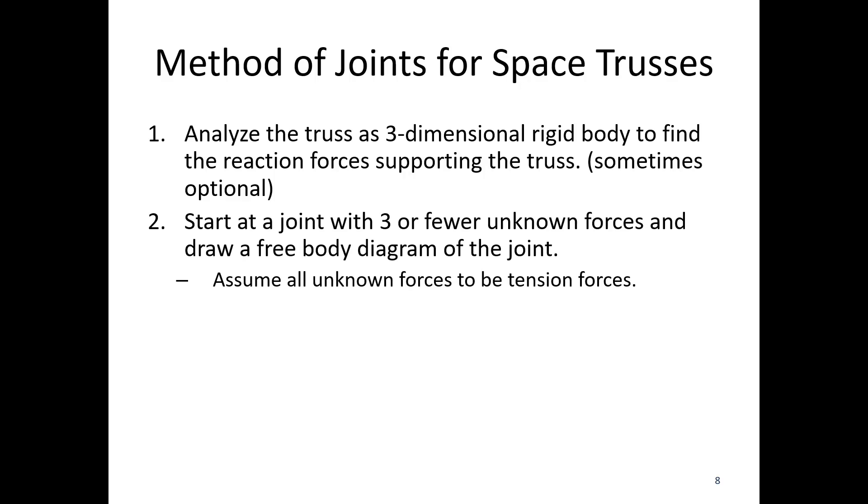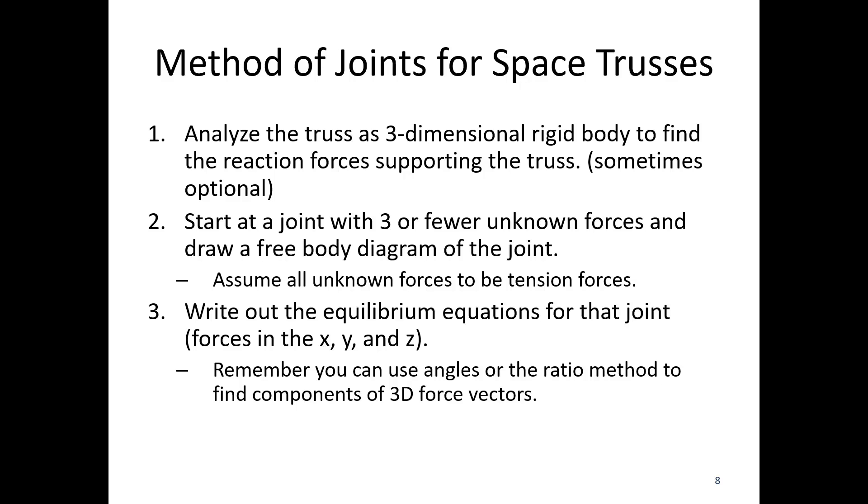Two, we're going to start at a joint with three or fewer unknown forces and draw a free body diagram of that joint. And so three members now because we have sum of forces in the x, sum of forces in the y, and sum of forces in the z. So at each joint, we have up to three possible equations. And we're going to do the same thing. We're going to assume everything is tension up front. If we get a positive number as a result, it's actually tension. If we get a negative number as a result, we can assume it's compression. And then write out your equilibrium equations for that joint.